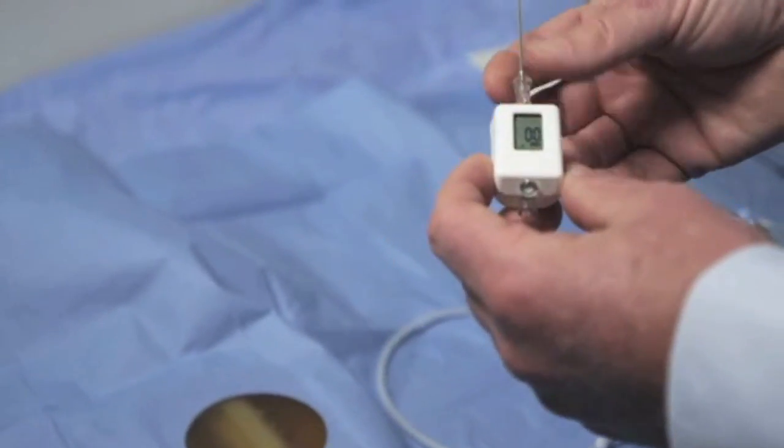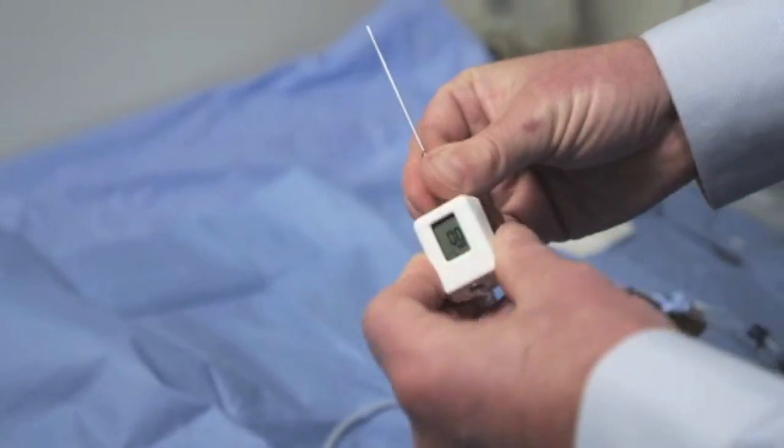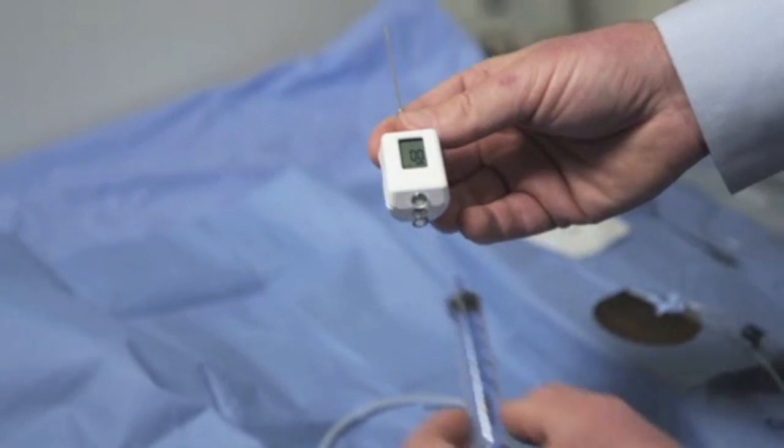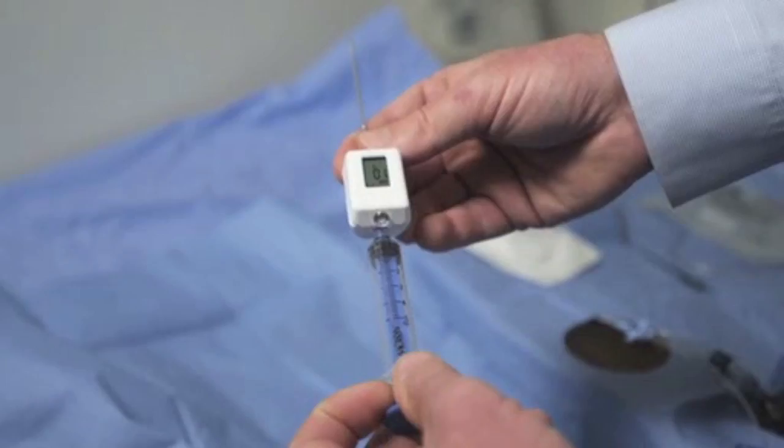Once the device is turned on, the finder needle, typically an 18-gauge needle, is attached to one end and a standard syringe to the other end of the device.